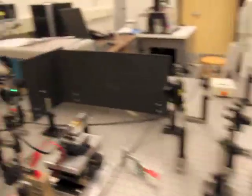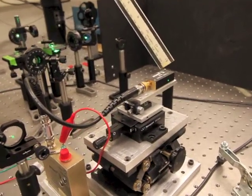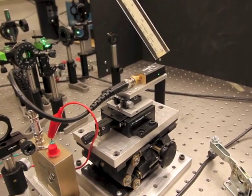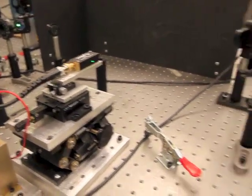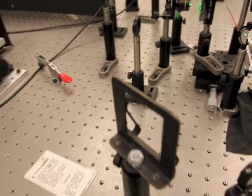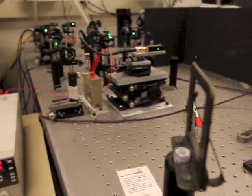The second branch goes through an acoustic optomodulator and that is frequency shifted by 80 megahertz and it combines through a series of beams at the beam splitter right where my ruler is.